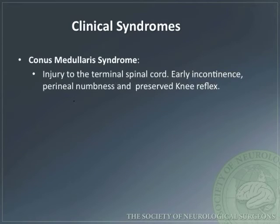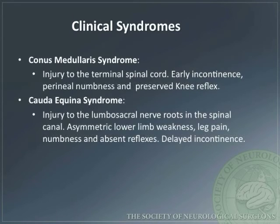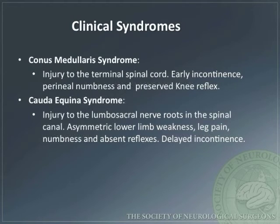Conus medullaris syndrome occurs after an injury to the terminal spinal cord, leading to early incontinence, perineal numbness, and preserved knee reflex. Cauda equina syndrome occurs after injury to the lumbosacral nerve roots in the spinal canal, leading to asymmetric lower limb weakness, leg pain, numbness, and absent reflexes. Delayed incontinence may occur in this case.